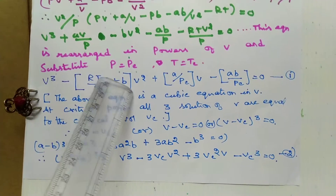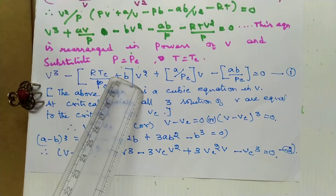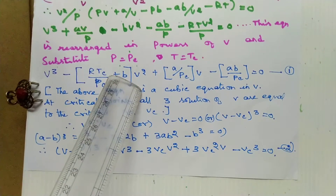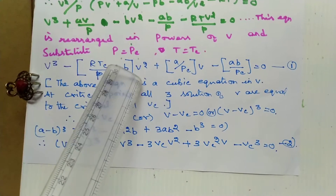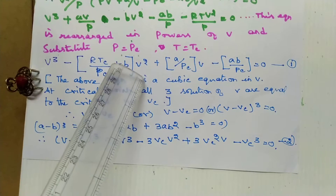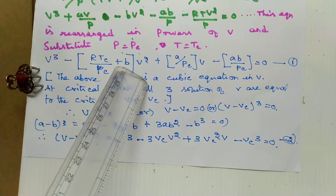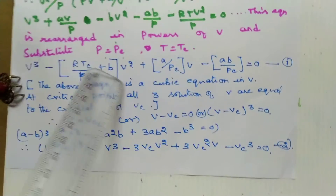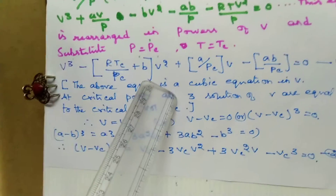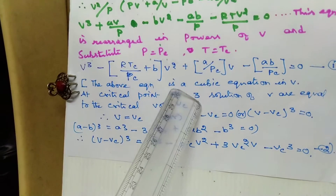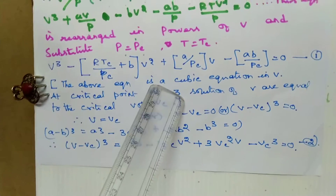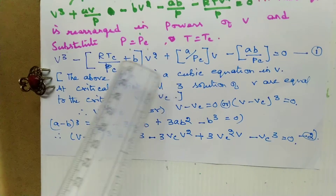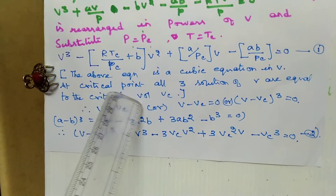This is a cubic equation. There are three values for volume. At the critical point — critical temperature — all three volume values are equal at the critical volume.